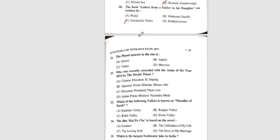Question 31: The planet nearest to the sun is — option D, Mercury. Question 32: Who was recently awarded Asian of the Year 2014 by Straits Times? Question 33: The correct answer is option A, Kashmir Valley.